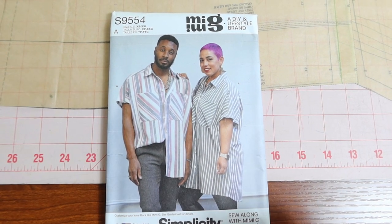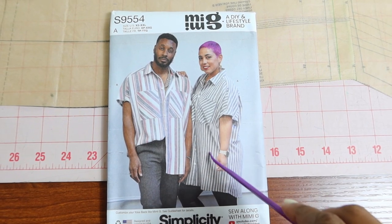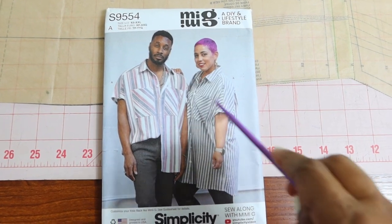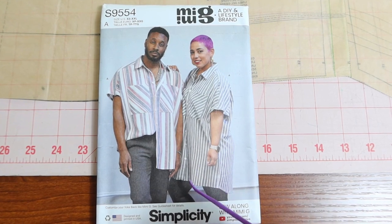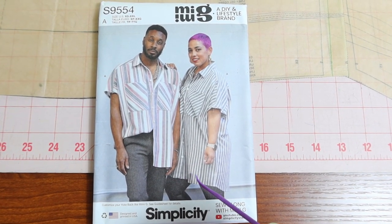I just cut out the pattern pieces for Simplicity 9554, and I want to make view A. You can see that the front is a little bit shorter than the back.